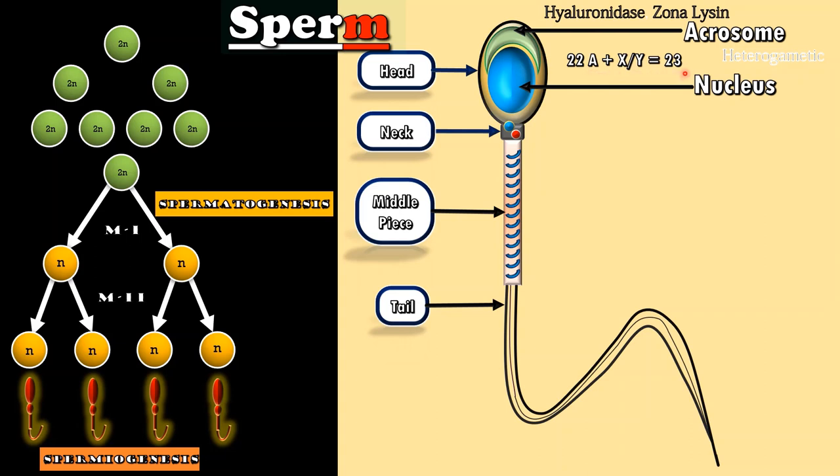Therefore, in males, males are said to be heterogametic whereas females are said to be homogametic.